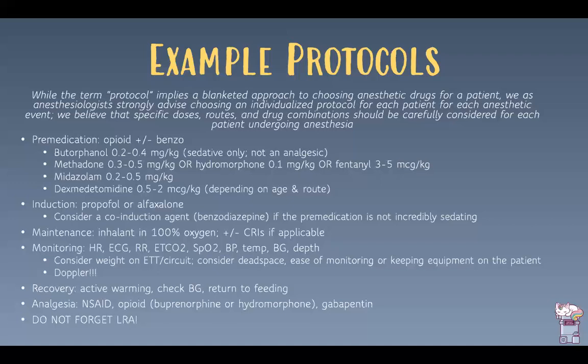For recovery, don't forget active warming, checking glucose, and returning to feeding as soon as the patient is able. Analgesia is really important — NSAIDs if appropriate, opioids like buprenorphine or hydromorphone, gabapentin, and local regional anesthesia. Adjust local anesthetic doses down — if you typically use 1 mg/kg of bupivacaine, consider decreasing to 0.5 mg/kg. Local regional anesthesia can't be underemphasized because the MAC reduction it provides is phenomenal.